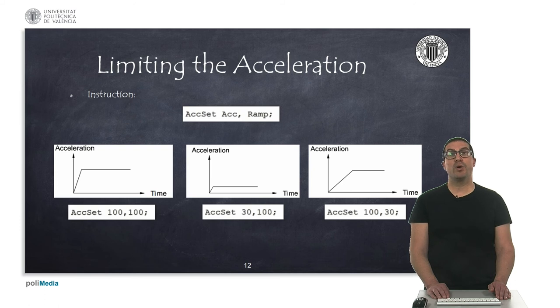Here we show the acceleration profile for three possible settings. In the first one, the robot moves at maximum acceleration and in the shortest possible time, which is the default setting. In the other two examples, the value of maximum acceleration is limited on the one hand but not the slope, and in the other case the slope is limited but not the maximum acceleration.